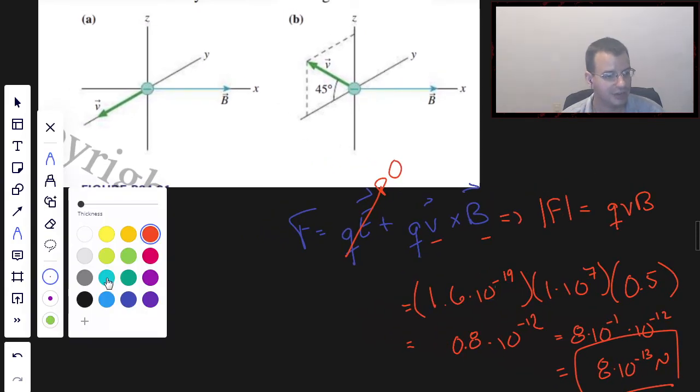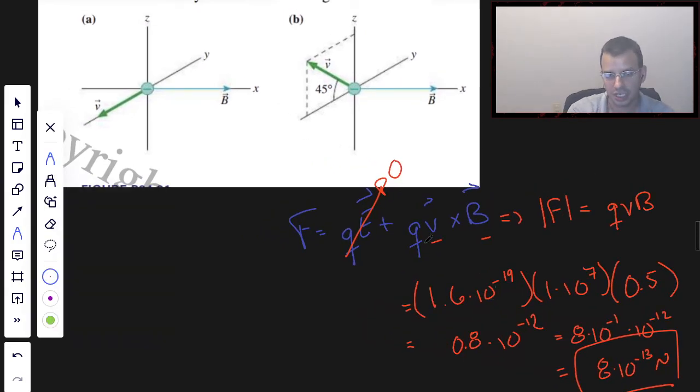All right, so now we need to find the direction. So we're going to do v cross B. So the way I do cross products is I point my fingers in the direction of the first vector, which in this case is v out of the board, cross B. So it's going to be v cross B. And then your thumb is going to point in the resulting direction. So point your fingers in the direction of the first vector. Bend your fingers in the direction of the second vector. Your thumb is the resulting vector.